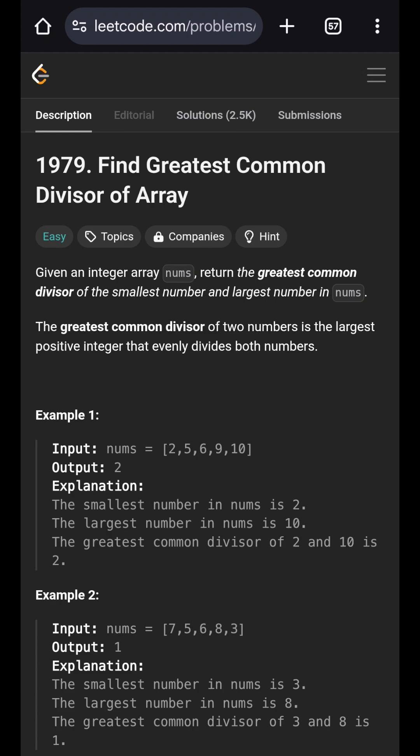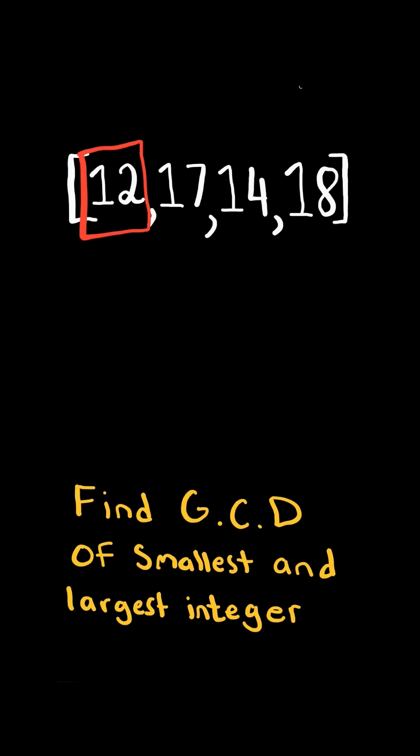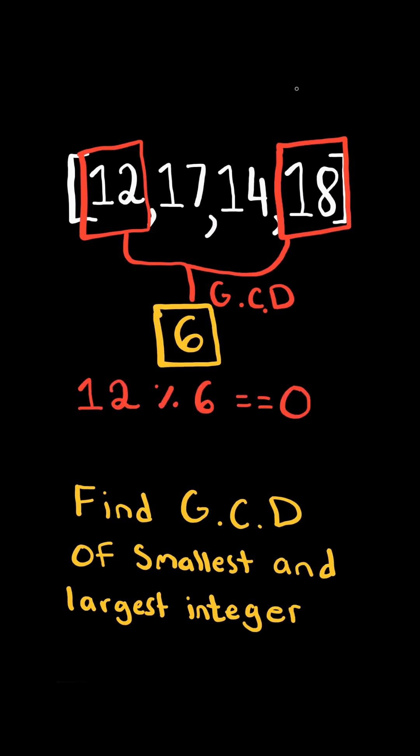Find the greatest common divisor of an array. The smallest number is 12 and the largest number is 18. The greatest common divisor of 12 and 18 is 6, because 6 evenly divides both 12 and 18.